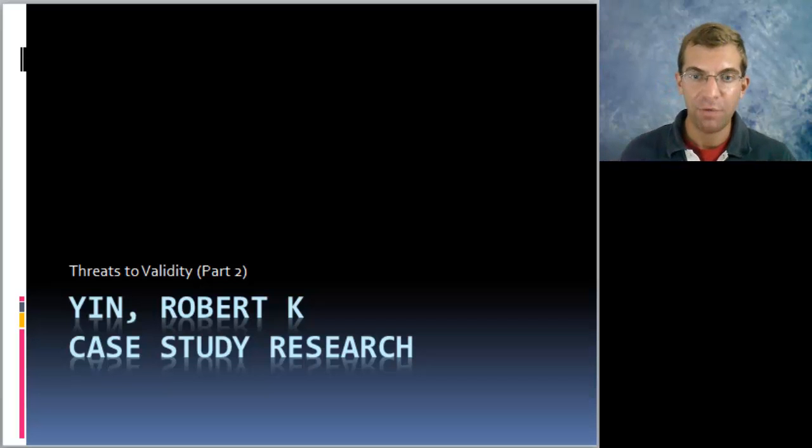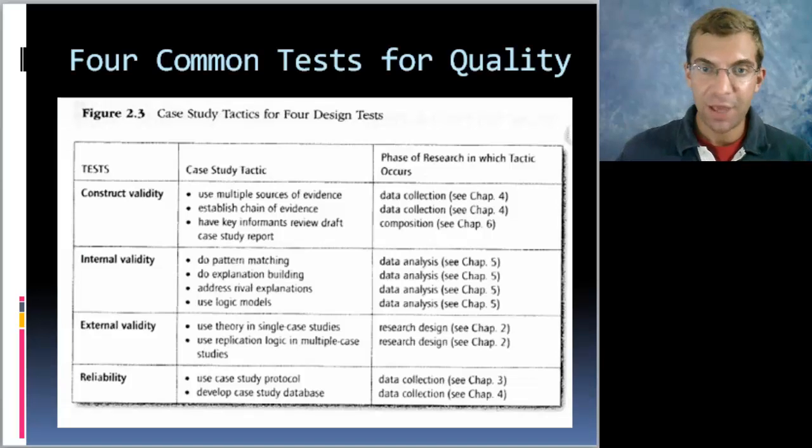Now we're going to do the second half of the threats of validity that are in the YIN book. Again, this is what these are. We're going to now look at construct validity and reliability.